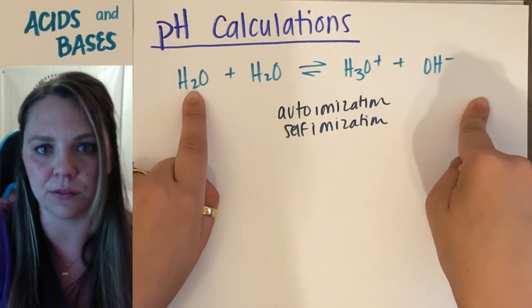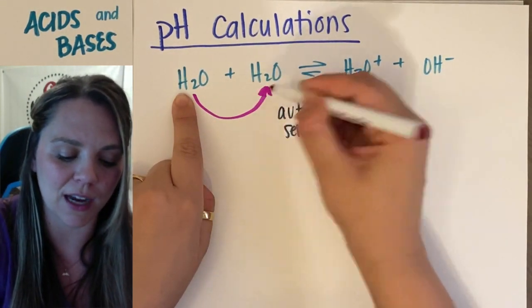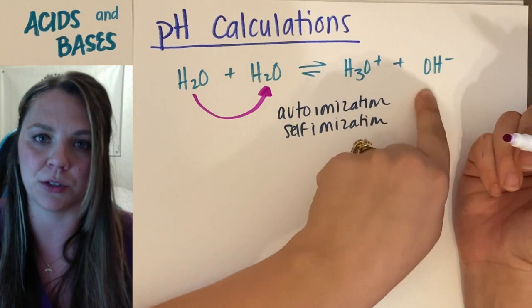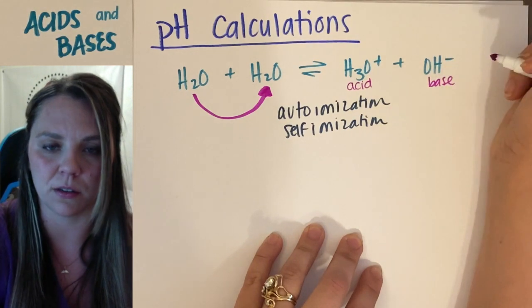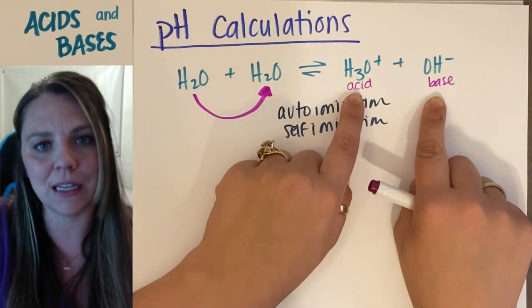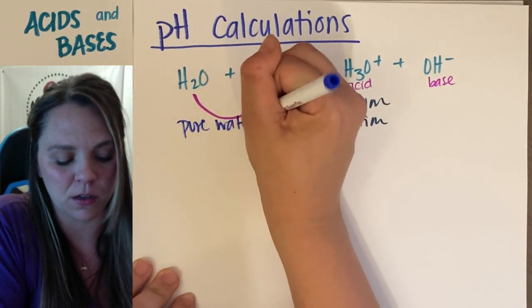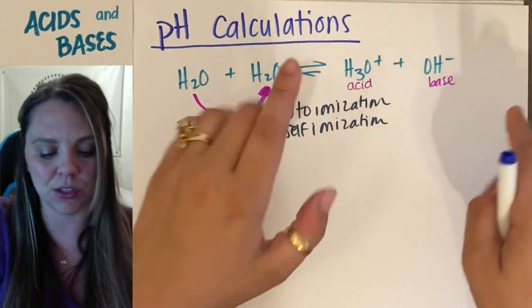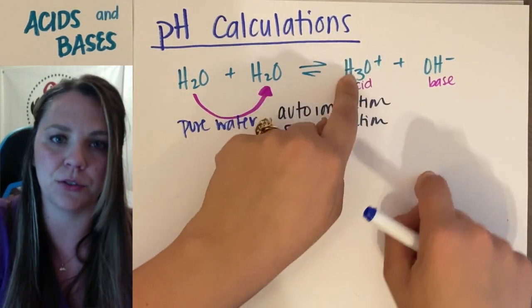Water is ionizing itself. One water donates a hydrogen to another water, making one hydronium and one hydroxide — an acid particle and a base particle, or conjugate acid and conjugate base if you were labeling this. So in any pure water solution, I have hydronium and hydroxide. It's just that in pure water, I have an equal amount of hydronium and hydroxide.